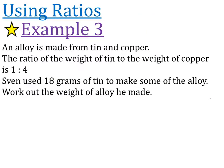Alright, final example for today. An alloy is made from tin and copper. If you were wondering, an alloy is just a combination of metals together. So don't worry, it's just got two metals joined together. The ratio of the weight of the tin to the weight of the copper is 1 to 4. So we've got tin to copper. So tin is the first thing, and copper is the second one. And it's in the ratio of 1 to 4. Sven used 18 grams of tin to make this particular alloy. Work out the weight of the alloy that he made.